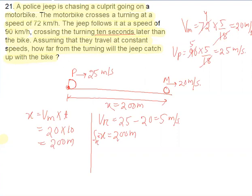So for time, v relative is equal to s relative divided by time. So t is equal to s relative is 200 and v relative is 5. Then this one is your 40 seconds.